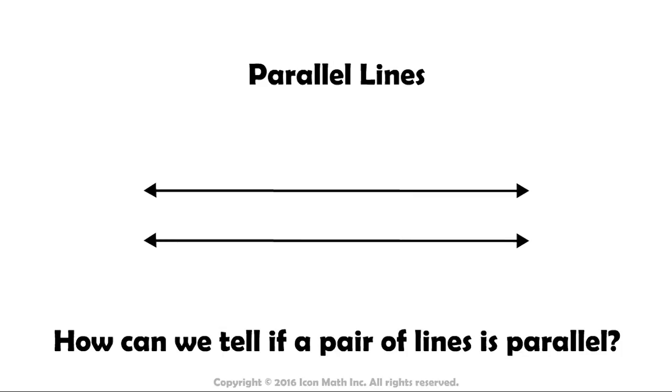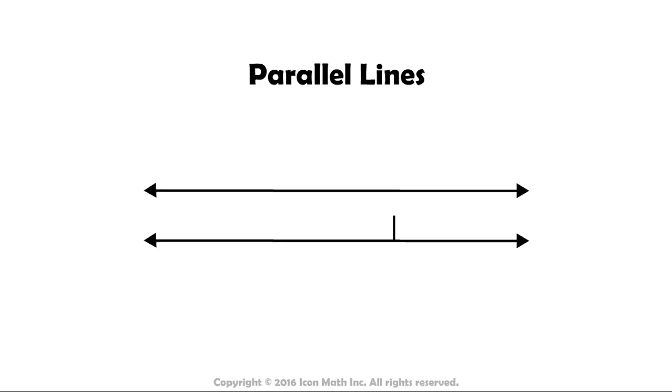If we draw a perpendicular line to one of the lines and make it intersect the other one as follows, then we draw another perpendicular line at some other point, we get the following figure.